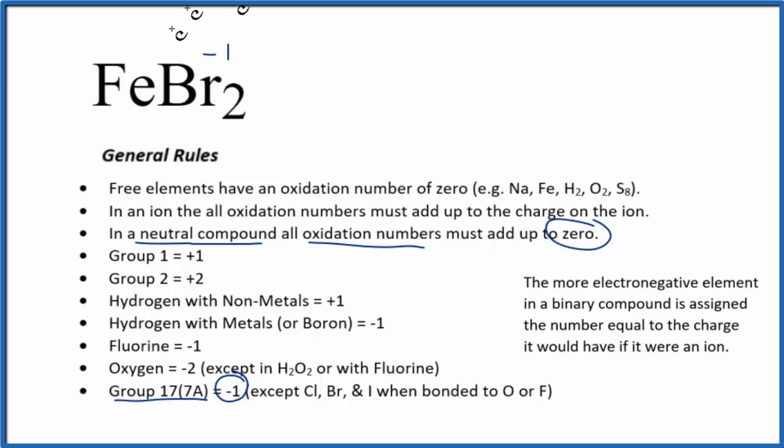That means for the bromine here, we have 2 times minus 1. That's minus 2. So the iron, it has to be plus 2. So that's its oxidation state. So those are the oxidation numbers for FeBr2, iron 2 bromide.